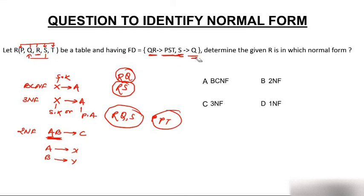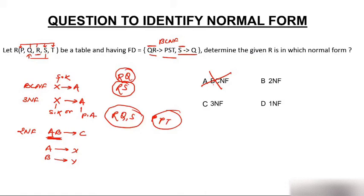First functional dependency: QR to PST. BCNF says this should be a super key — is QR a super key? Yes, so this functional dependency satisfies BCNF. Now check S to Q: is S a super key? No, S is not a super key (RS is a super key). So S to Q is not in BCNF, and therefore the entire table is not in BCNF.